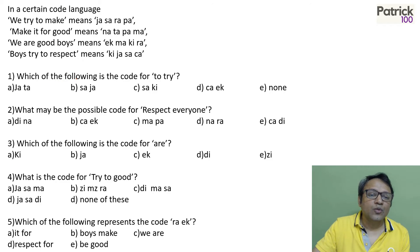Similar question. Which of the following is the code for to try? If you look at to try is there first, to try there in last. Look at what is common. You'll say JA and SA are common. So that means that should be the code.